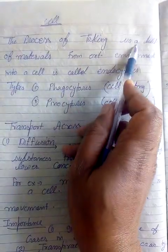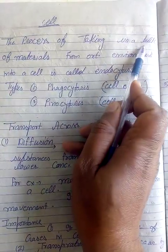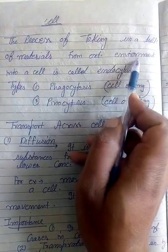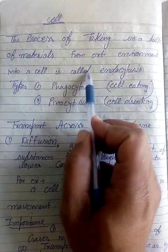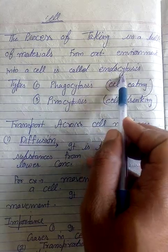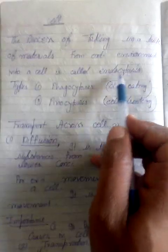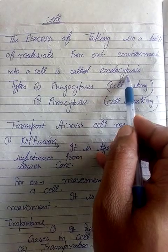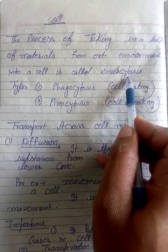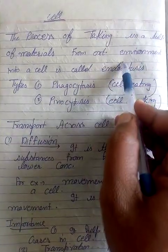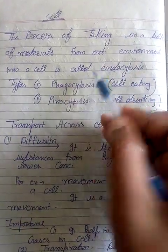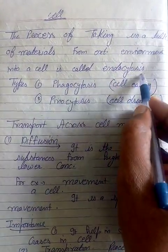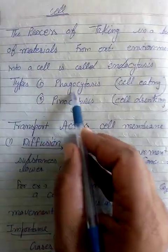The process of taking in a bulk of material from the external environment into a cell is called endocytosis. Endocytosis means inside the cell — endo means inside, cytosis means cell. Material ko cell ke andar jana, lena — that is called endocytosis. It is of two types.